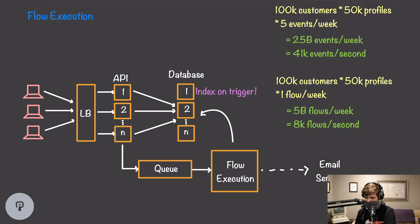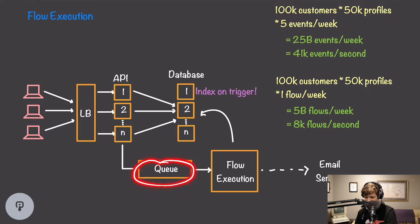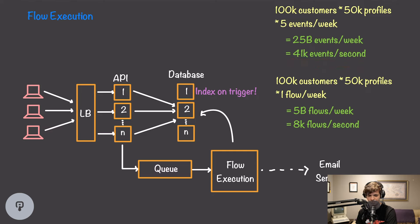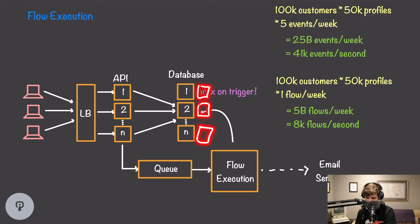Doing the math: with five events per week per profile, that's 41,000 events per second — what our queue and flow execution service need to handle. Only one of those five events triggers a flow, giving us 8,000 flows per second. We can horizontally scale both the queue and the flow execution service to handle this load. Every time the flow execution service is triggered, it reads the database to find flows triggered by that event, so our database needs to handle 41,000 reads per second. We index on trigger for our flows table and may add read replicas to distribute the read load.